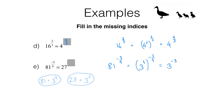Now I can use the same index law that we've just used but in reverse, by writing 3 to the negative 3 as 3 to the power of 3, all to the negative 1. These are equal because 3 times negative 1 gives us negative 3. Normally we're used to starting with something in this form and turning it into this, but I've deliberately gone the other way this time. Why? Well, 3 to the power of 3 is 27, so I wanted to get something of this form because we're looking for 27 to the power of something. In fact I'm almost finished — 3 cubed is 27, so what I've got here is 27 to the negative 1. That means the missing index is negative 1.